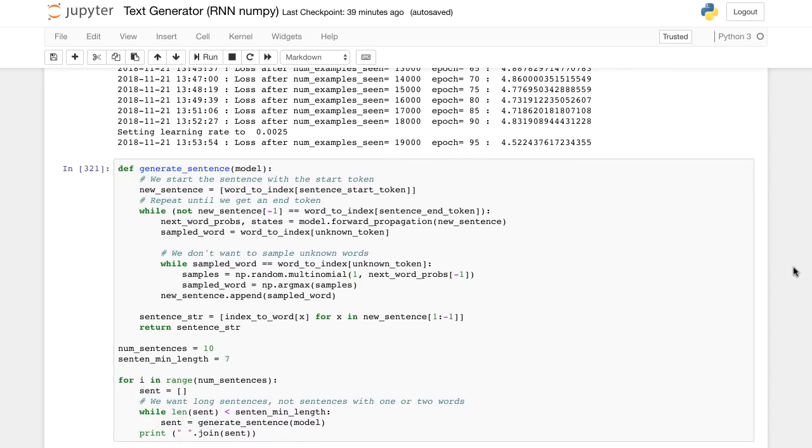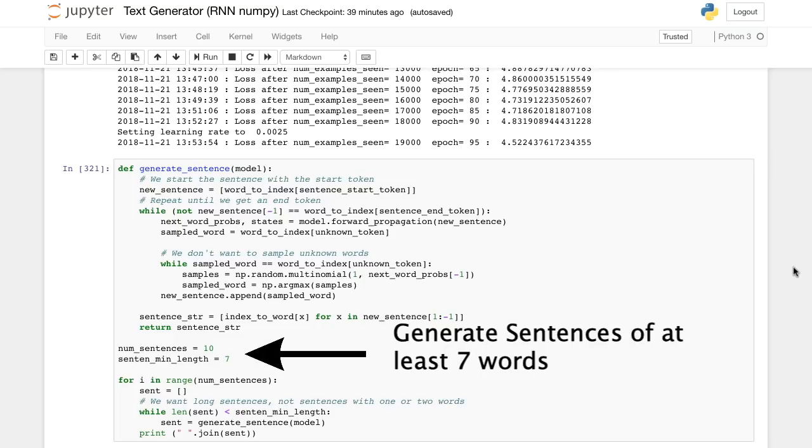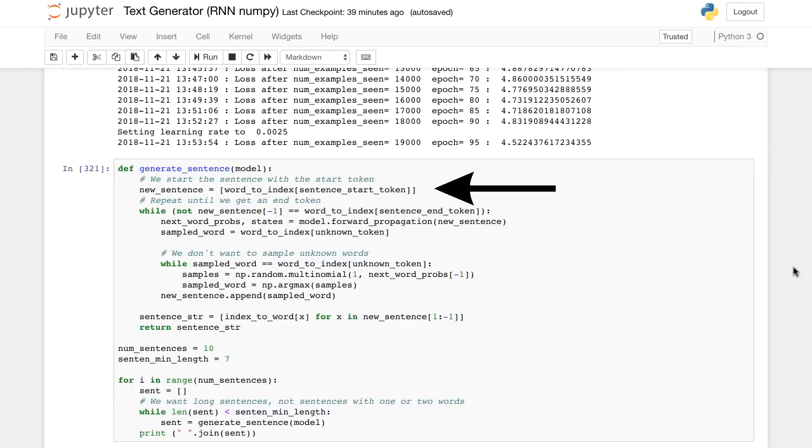We tell our model to generate sentences of at least 10 words. Each time, we first feed the sentence the start word token, and then let the model take over from there. It performs the forward step and generates the output probabilities at each time step. This is basically an 800 dimensional vector containing values proportional to the probability of sampling that word. We sample the words until we sample an end of sentence token, and boom, we have our generated sentence.